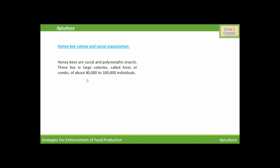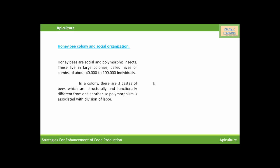Now we will discuss about honeybee colony and social organization. Honeybees are social and polymorphic insects. They live in large colonies of about 40,000 to 1 lakh individuals, and these colonies are called hives or combs. In a colony there are three castes of bees which are structurally and functionally different from one another, so polymorphism is associated with division of labor.